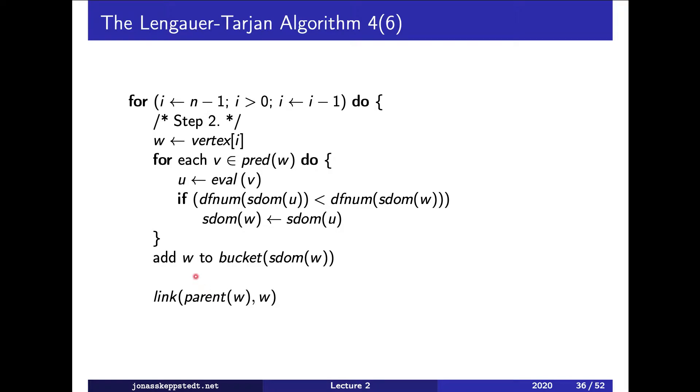What we do then is call eval for each predecessor and check if the semi-dominator of the returned value is lower. It's the search number and then what we already have. In that case we save that as the semi-dominator of the node we are processing.